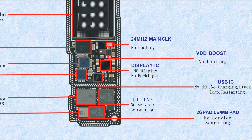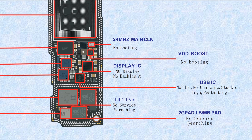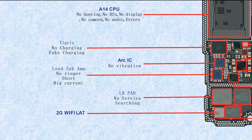This one is the 2G PA, DLBMBPAD — also a power amplifier, for 2G or low band and medium band. If broken, it causes no service or searching. That's all for AP board Side A — now let's look at the other side.